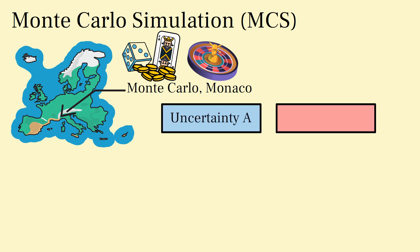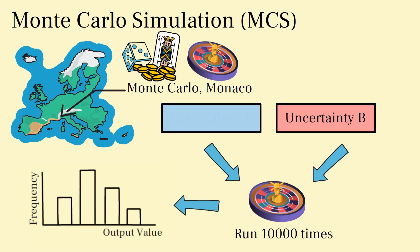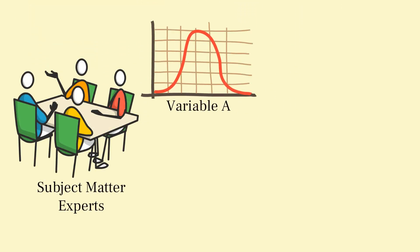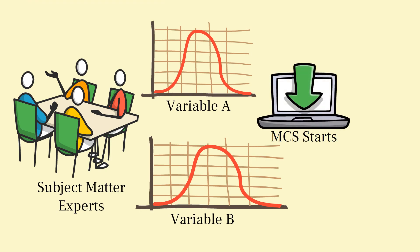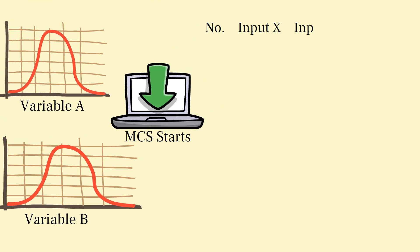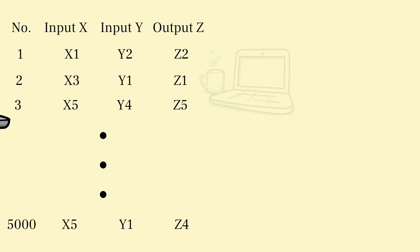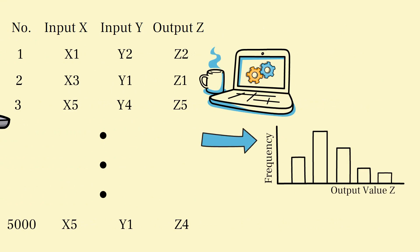Monte Carlo simulation allows us to model uncertainties by simulating a large number of possible outcomes. It's particularly useful when dealing with variables like cost, time, or resource availability. We assign probability distributions to these variables based on historical data or expert judgment. The simulation then generates random values within these distributions to create different scenarios. By running multiple simulations, we obtain a range of possible outcomes and their associated probabilities.